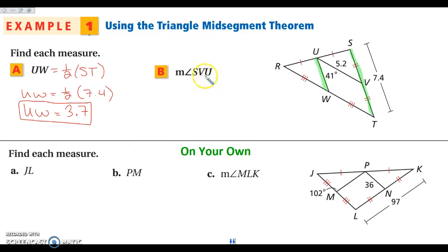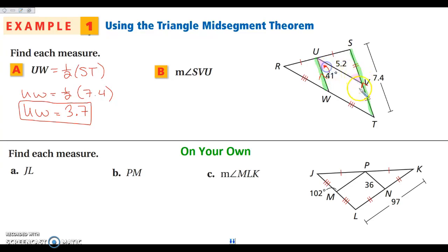Next we're going to look at the measure of angle SVU. SVU is formed by the mid-segment and the segment of the triangle and this transversal. I have another angle up here, and I know that these two lines are parallel. My purple angles here are alternate interior angles. So the measure of angle SVU is 41 degrees because it is alternate interior angles with angle WUV.